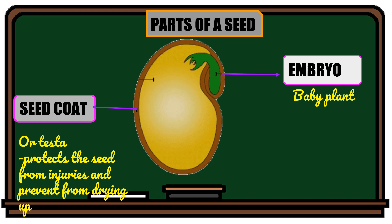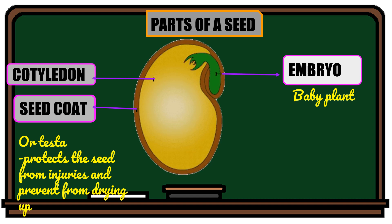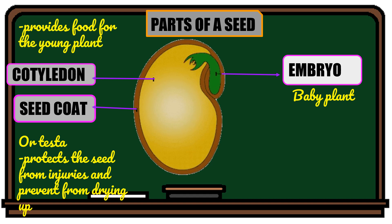There is a baby plant inside the seed — we call that the embryo. The embryo is the young or immature plant found in the seed. It will soon develop into a plant. In order for the embryo to survive inside the seed, there is stored food called the cotyledon. The cotyledon provides food for the young plant, and it is the off-white and biggest part of the seed.